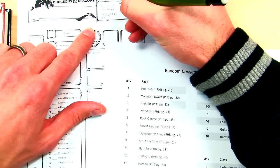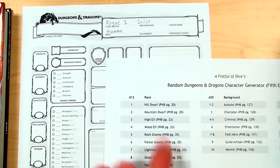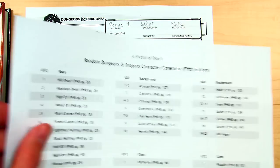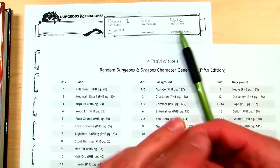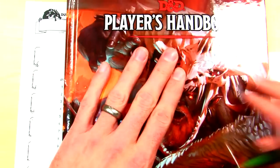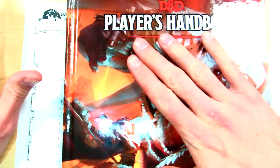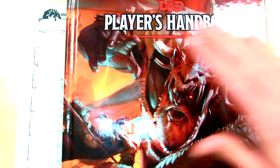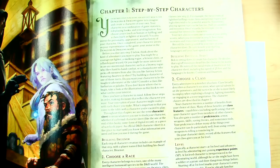Level 1. Without further ado, let's get going. I have my Player's Handbook, and as I've mentioned before, the basic rules is also a great resource if you don't have it. The basic rules should give you everything you need to create a human and a rogue — I believe they're both in there.